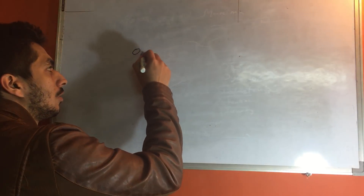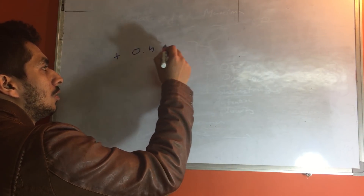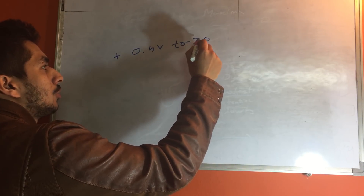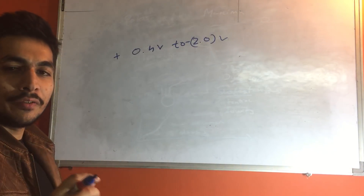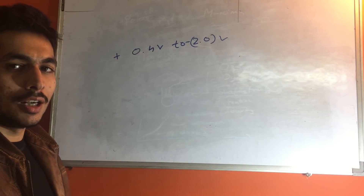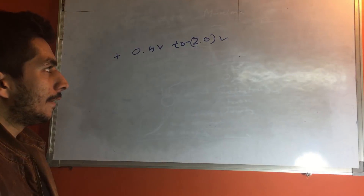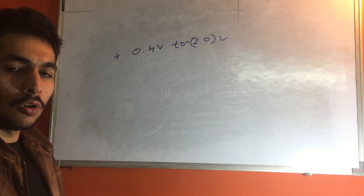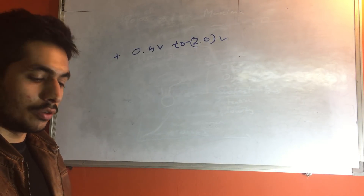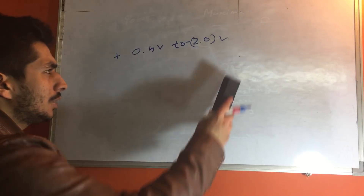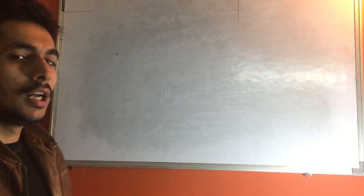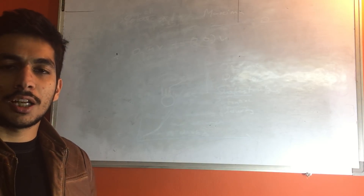The third advantage is that the mercury electrode has a very wide potential range: from +0.4 V to −2.0 V. This wide range means a lot of metals can be analyzed using the dropping mercury electrode.